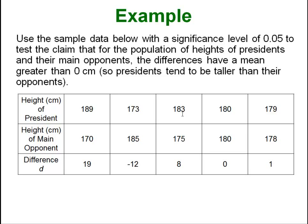So we are going to use that data and a significance level of 0.05 to test the claim—we always want to identify our claim—that for the population of heights of all presidents and their main opponents, the differences have a mean greater than zero. What does that mean? Well, the way that we are measuring it, that means that the presidents tend to be taller than their opponents. So you always want to figure out what that means because that is going to help you out later when you have to reword these in plain English.